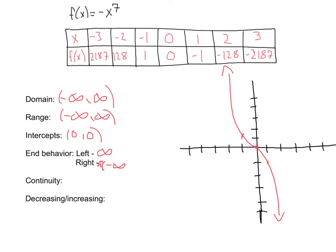Our continuity — again, this is a continuous function with no gaps, so we are continuous from negative infinity to positive infinity. Now let's look at where we're decreasing. As we move from the left to the right, the graph is moving downward the entire time — it looks like the whole graph is decreasing. So we're decreasing from negative infinity to positive infinity. Are we increasing at all? No, we are not increasing because the whole graph is decreasing.